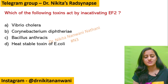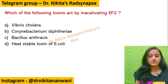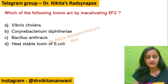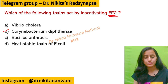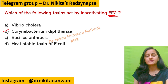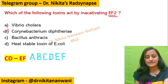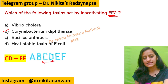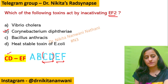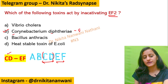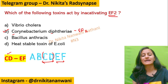The correct answer is Corynebacterium diphtheriae, which acts by inactivating EF2. The mnemonic to remember this: think of ABCDEF — CD is EF. So CD, that is Corynebacterium diphtheriae, acts by EF2 inactivation.